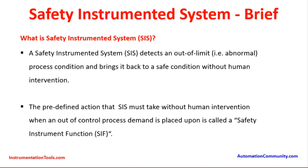What is a safety instrumented system? A safety instrumented system detects abnormal process conditions and brings the process back to a safe condition without human intervention. In process plants, normally a DCS — distributed control system — is working and doing the plant automatic operations. Whenever any hazardous conditions arise that the DCS control system cannot contain, the SIS system comes into action. The predefined action that SIS must take without human intervention when an out-of-control process demand is placed upon it is called a safety instrumented function.